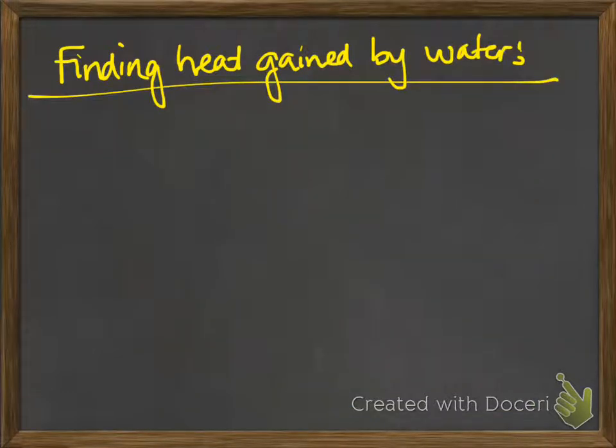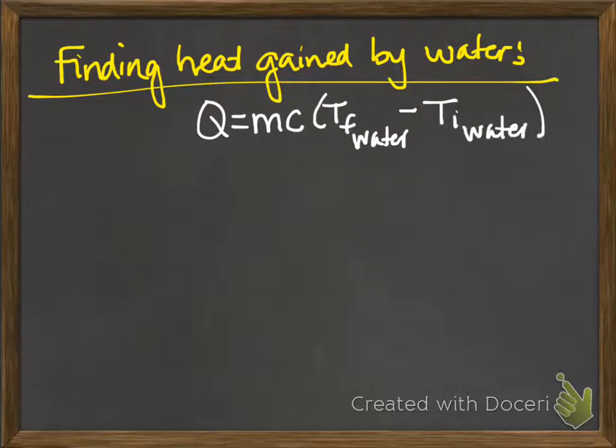So we can find the heat lost by the metal by calculating the heat gained by the water. So to do that, we're going to use the specific heat equation again, but this time we're not going to focus on the metal, we're going to focus on the water.